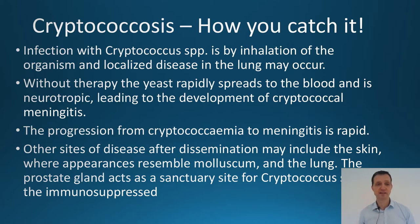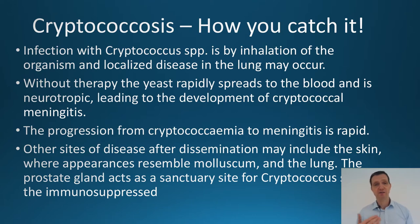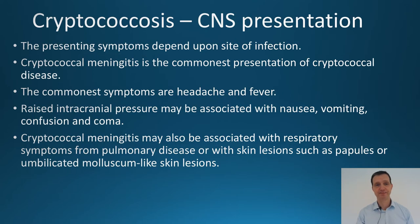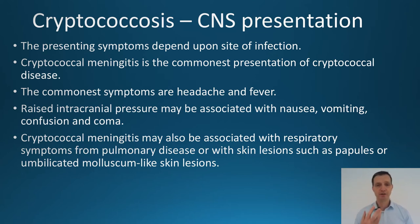Sometimes you can squeeze out pus from the skin lesions, and the lesions associated with cryptococcal skin disease appear very much like molluscum contagiosum. Cryptococcus can also hide out in the prostate gland as a sanctuary site. In people who are immunosuppressed with a very low CD4 count, the prostate gland can be a sanctuary site for seeding future infections if they are not put on HAART.